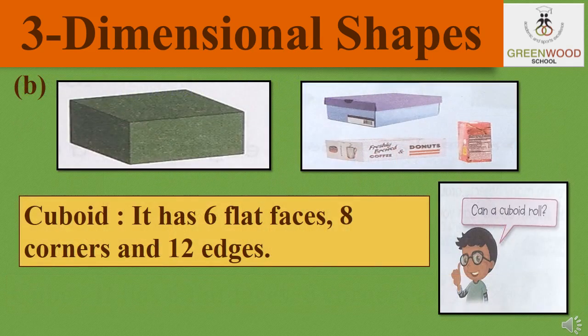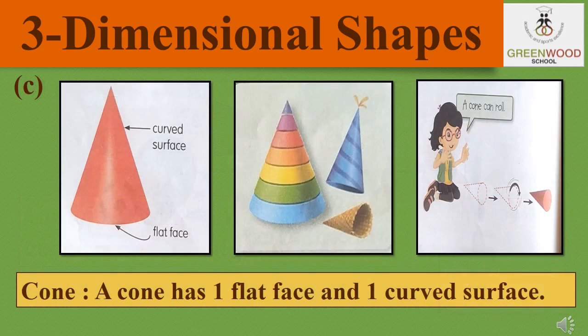The second one is cuboid. Again, it has six flat faces, eight corners, and twelve edges, just like a cube. But over here, all the six flat faces will not be the same, just like in square and rectangle. A cuboid cannot roll because it does not have a curved surface — it is made up of flat surfaces, and objects with flat surfaces do not roll.